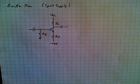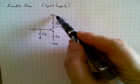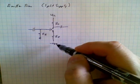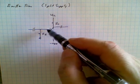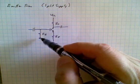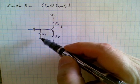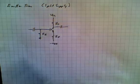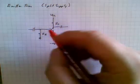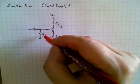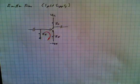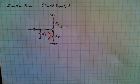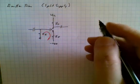Emitter bias is used when you have a split supply — positive VCC and a minus VEE. In this case, the base is simply taken to ground through some resistor Rb. We're going to analyze this circuit by looking at the base-emitter loop, and we're going to write Kirchhoff's voltage law around that loop.